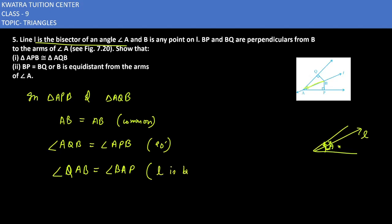In bracket we write that as L is bisector of angle A. Now in the last, what you have to write is which property you have used — it is ASA congruency.